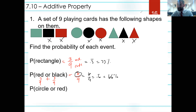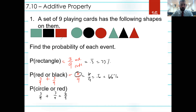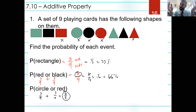Here's where things get a little crazy. What's the probability of picking a circle or a red card? You might think: three circles is 3/9, three red cards is 3/9, so add them for 6/9. But if we go count the cards that are circle or red, there are actually only five of them — not six. So we calculated 6/9 but the correct answer is 5/9. How is that possible?